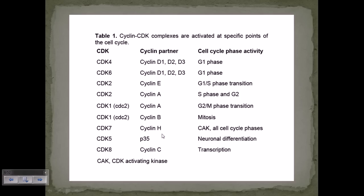These CDK proteins and their cyclin partners work in a sequential manner: D (CDK4/6), E (CDK2), A (CDK2), and B (CDK1). At each step, once a CDK's activity is done, most of that CDK is degraded using the proteasome system inside the cell. However, a small amount of CDK always remains in the cytoplasm, as it is needed to help revive activity in various situations.